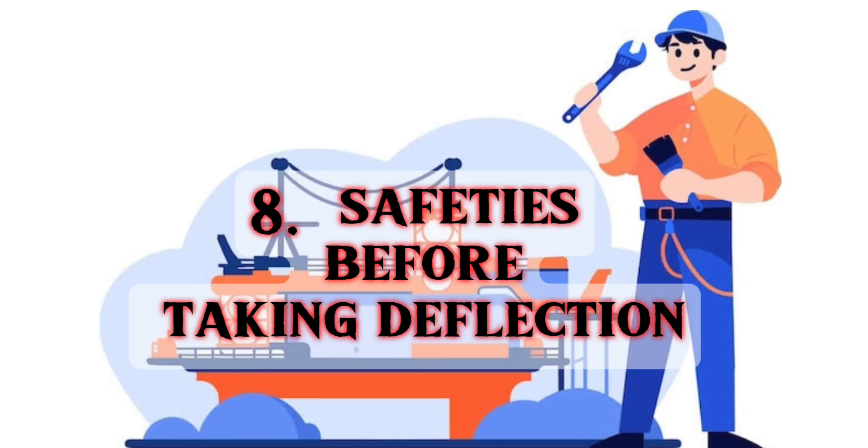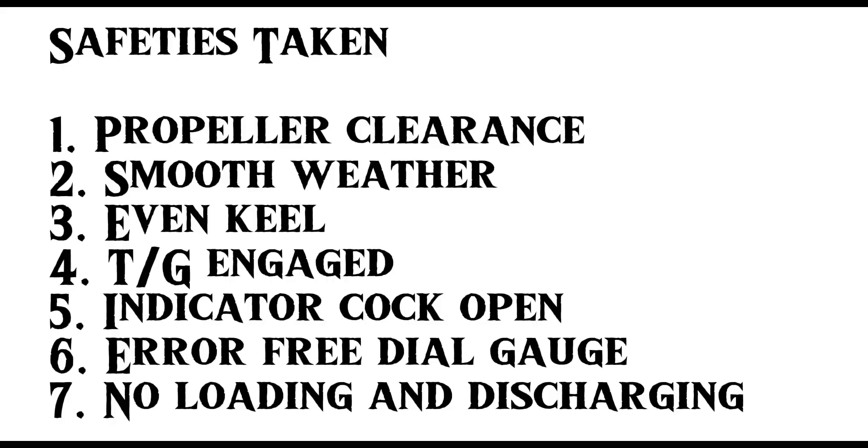Eighth question: Safeties before taking crankshaft deflection. The safeties to be taken are: first, propeller clearance; second, smooth weather; third, even keel; fourth, turning gear engaged; fifth, indicator cock to be opened; sixth, error-free dial gauge; and seventh, no loading and discharging.